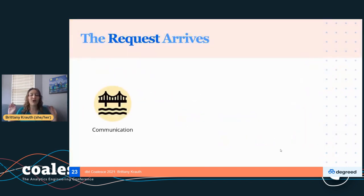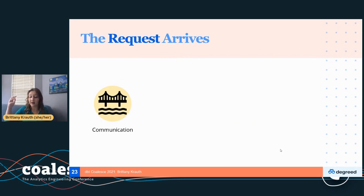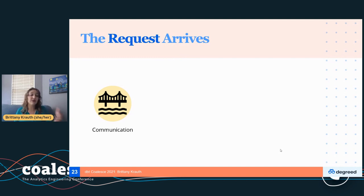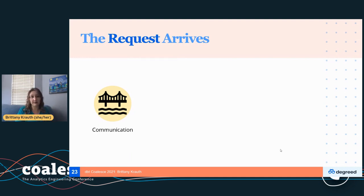When a request arrives, skill number one is communication — specifically, communicating between a business stakeholder who's familiar with business terminology and translating that into database terms. What tables are you going to need? What fields actually represent what they're speaking about? You're acting as the bridge between the business and the more technical database jargon.